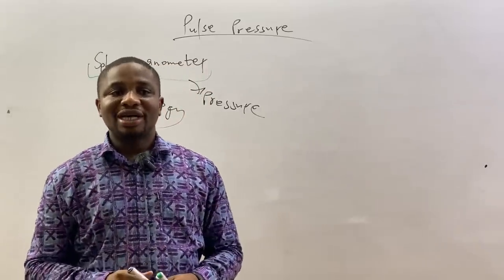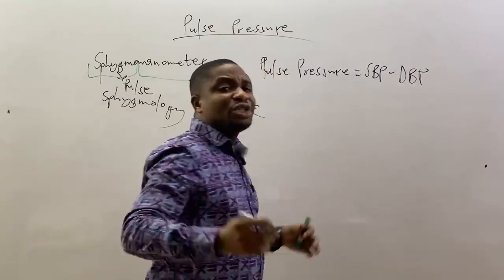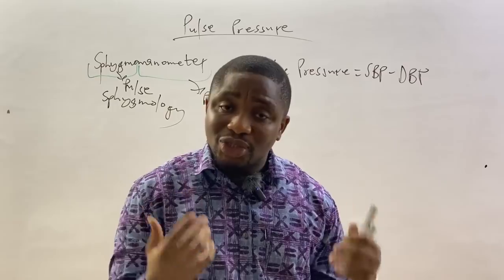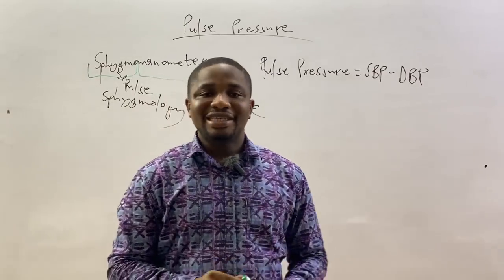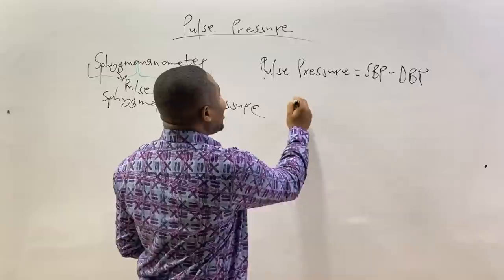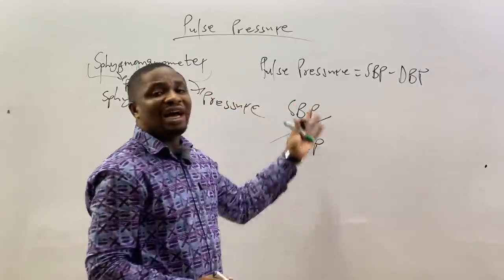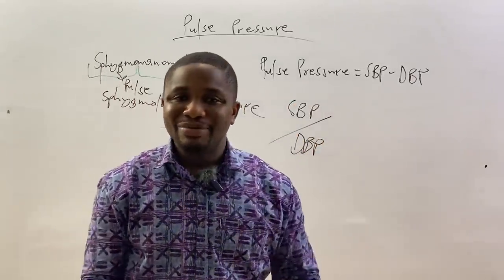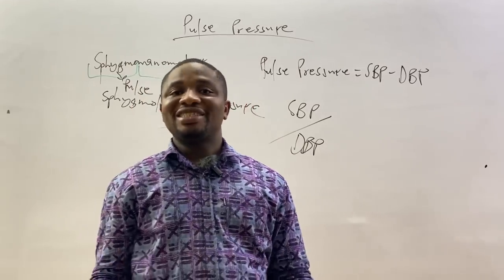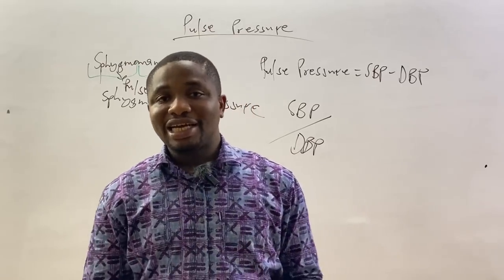So what then is pulse pressure? In short, pulse pressure is the difference between the systolic blood pressure and the diastolic blood pressure. When you measure blood pressure, you get systolic over diastolic. So if you have these two values, you can obtain the pulse pressure by subtracting the diastolic blood pressure from the systolic blood pressure.